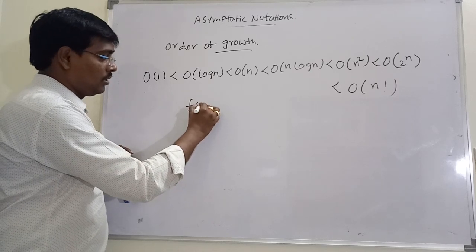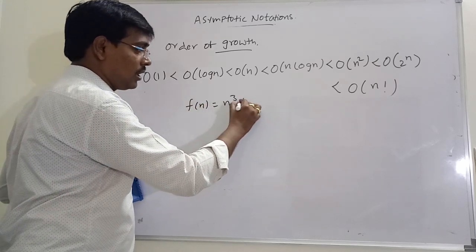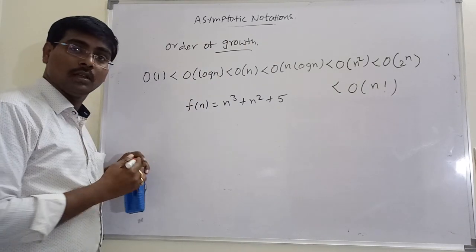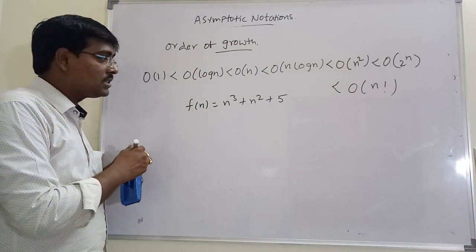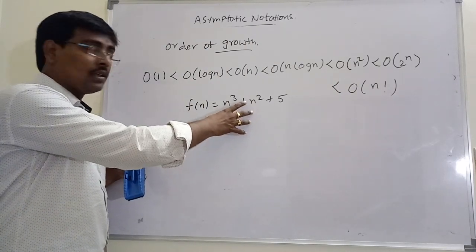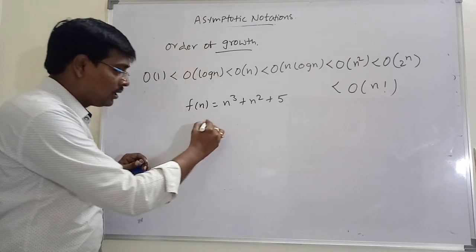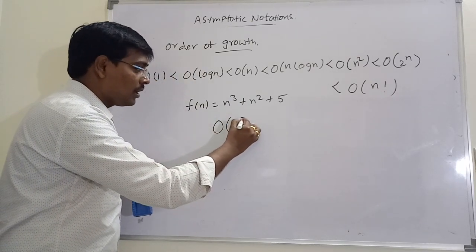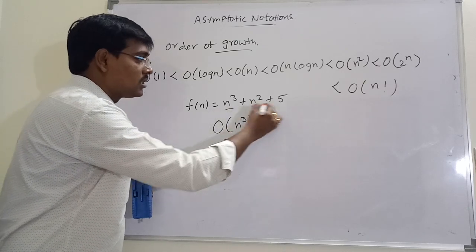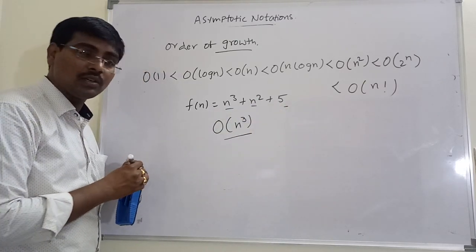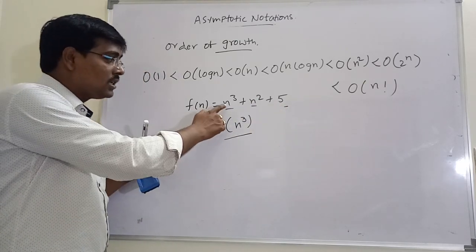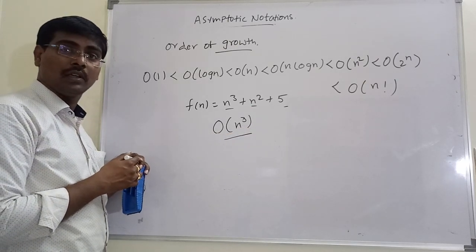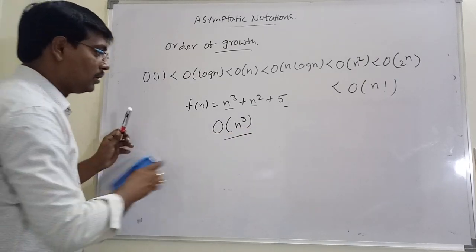For example, f(n) = n³ + n² + n. If you want to represent this function with Big O notation, it is simply Big O(n³), because among these three terms the highest time complexity is n³.